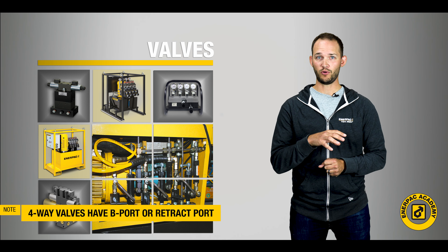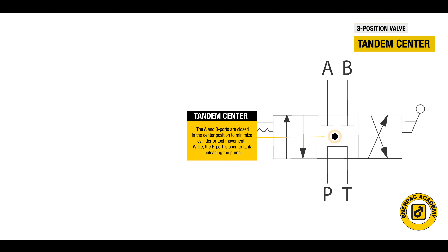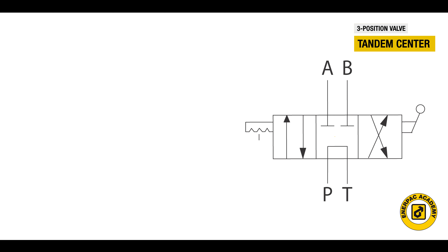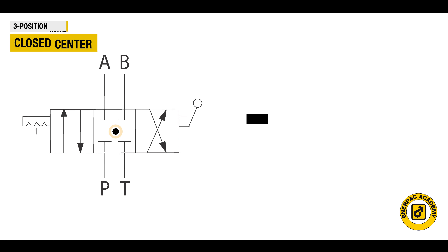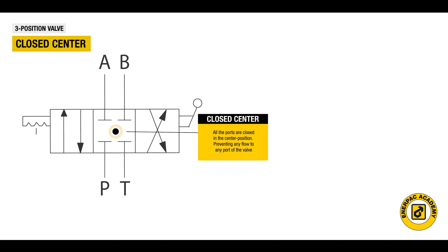The last term we will discuss relates to center configurations. Three-position valves have different configurations for the center position that create different operating characteristics, depending on the application. The most common center configurations are the tandem center and the closed center, with the tandem center being the most common. With a tandem center valve, the A and B ports are closed in the center position to minimize cylinder or tool movement, while the P port is open to the tank, unloading the pump. With a closed center configuration, all the ports are closed in the center position, preventing any flow to any port of the valve.